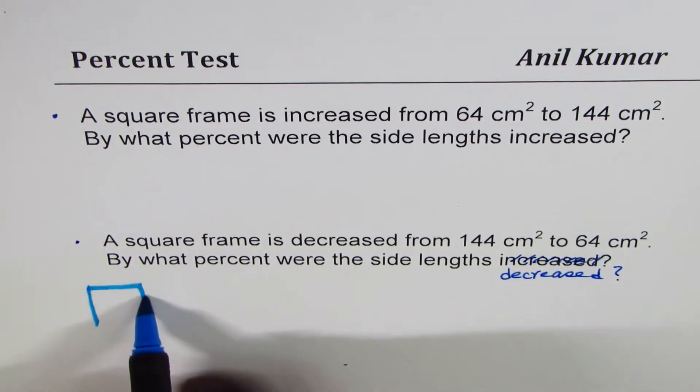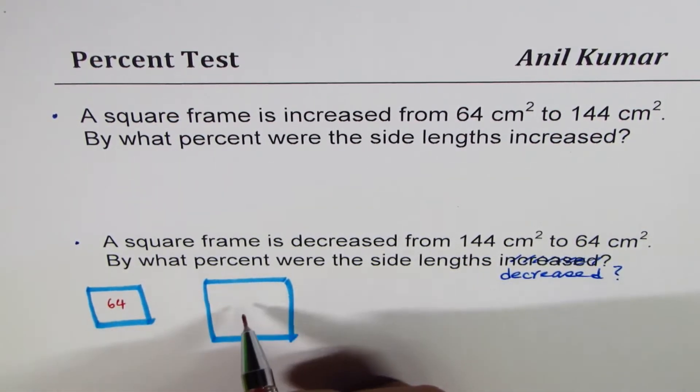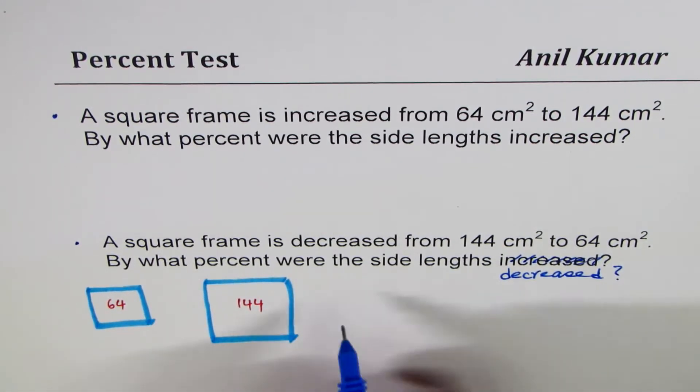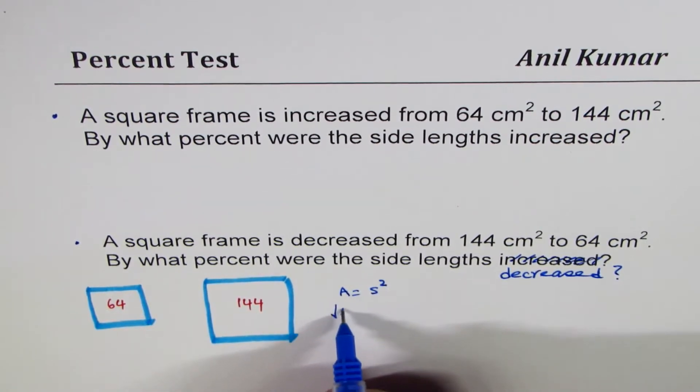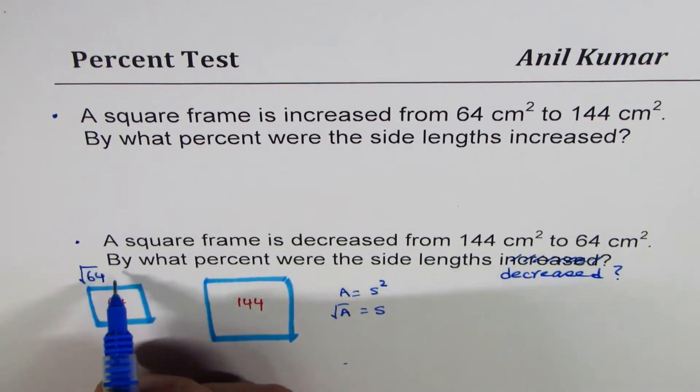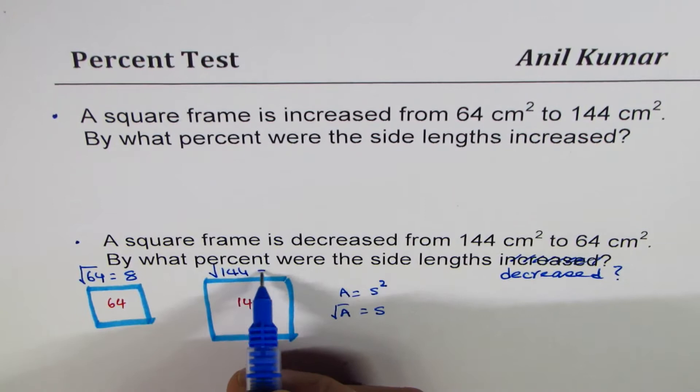...so let's say we have one small square and one big square. Area of these two is 64 and 144. If area is 64, what are the side lengths? We know the area is side squared, and therefore square root of area is the side length. So here the side length is square root of 64, which is 8, and in this case it is square root of 144, which is 12. All sides of a square are equal.